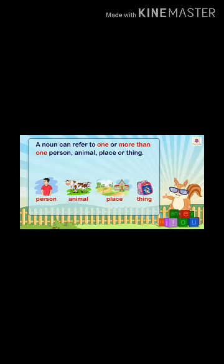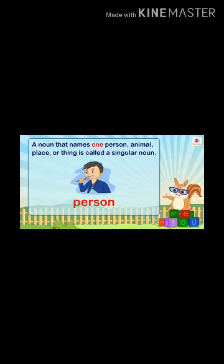Remember, a noun is the name of a person, animal, place, and a thing. When we change singular into plural terms, we change the number. A noun that names one person, animal, place, or thing is called a singular noun. If we talk about one thing, that is a singular noun.